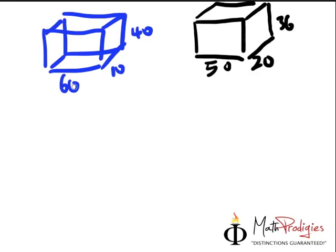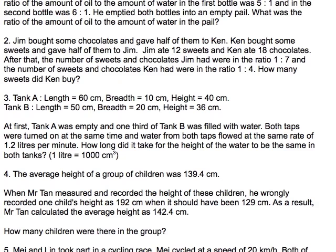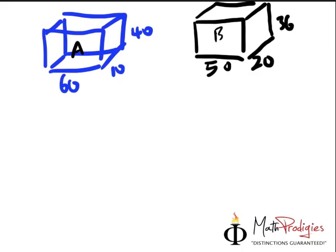Okay, then what happened? Tank A, this is tank A, and this is tank B. Tank A was empty, and tank B was one third filled with water. What does it tell you? It means that the height of the water is one third of 36. In other words, one third times 36 would give you 12 cm. So that's the original height of tank B.